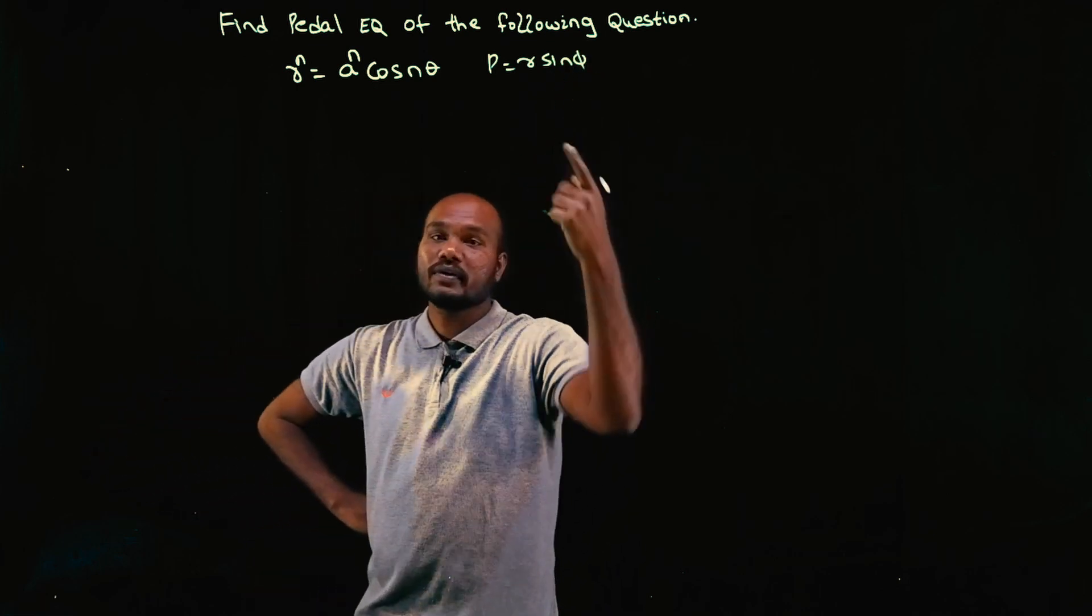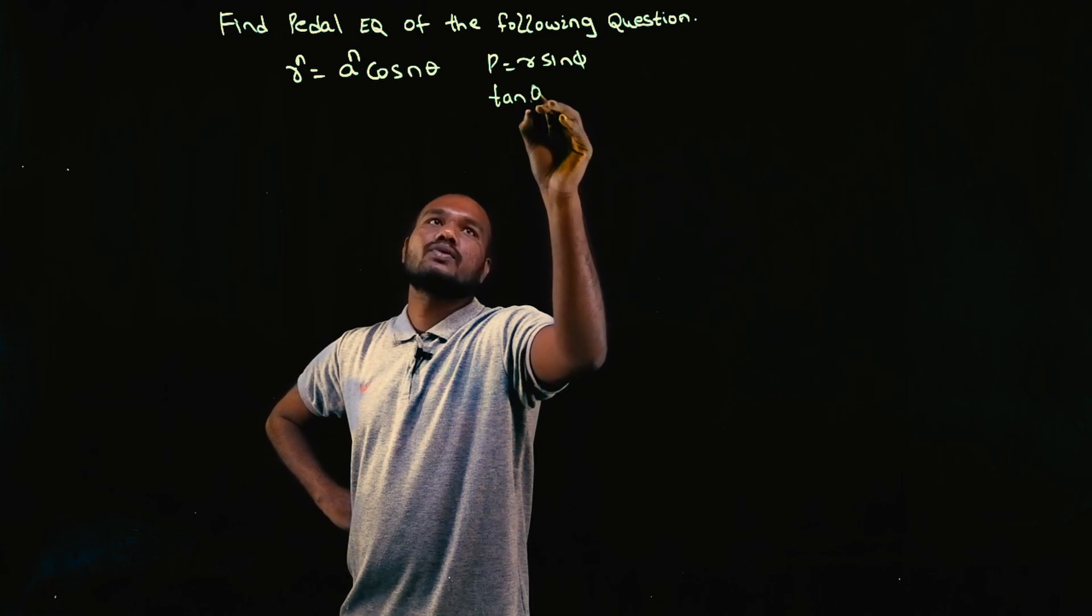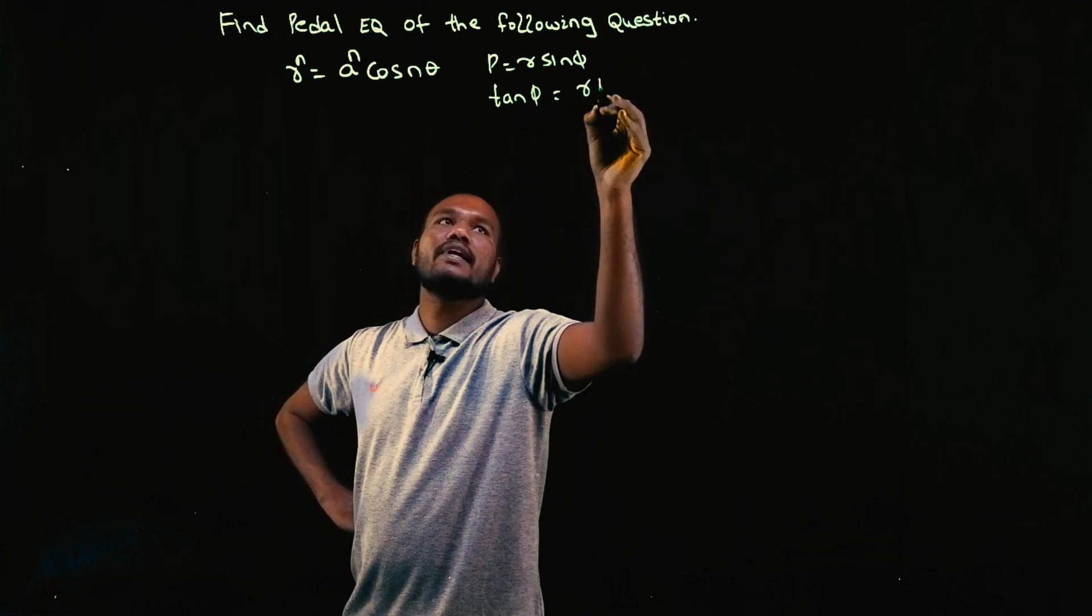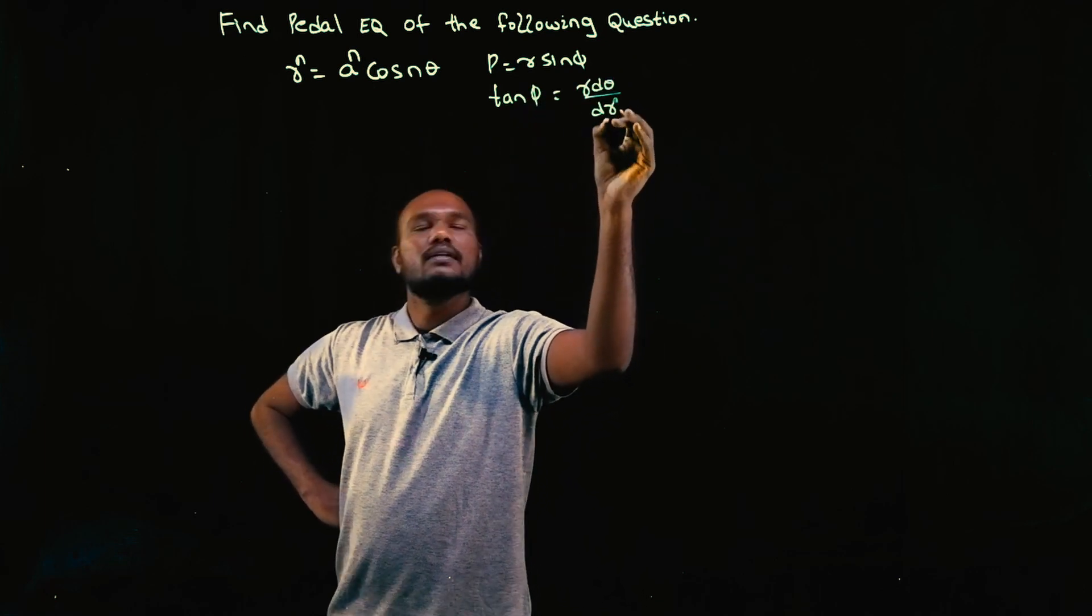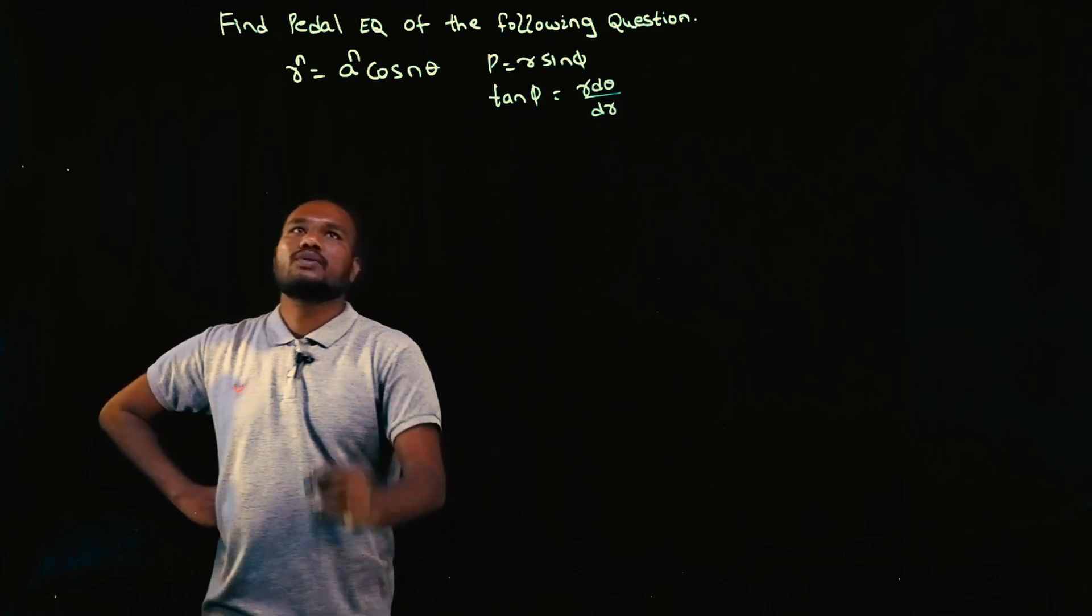So to substitute in the equation, what do you need? Phi value. How to find tan phi? So tan phi we have to find, that is R into d theta upon dr. Right? So let's do it.